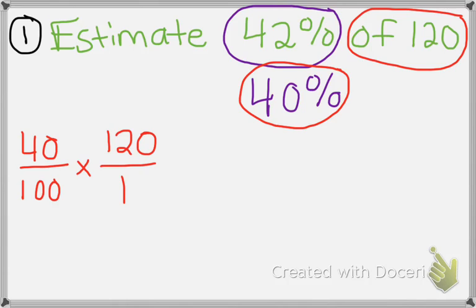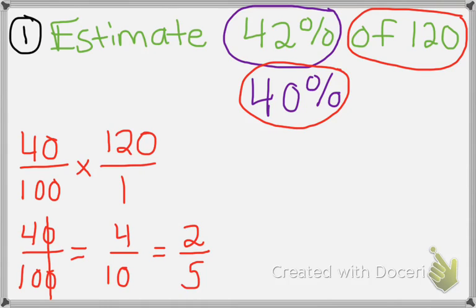Now before you can multiply, you can also simplify. So if you want to do that instead, 40 over 100. First thing that we can do, we see that both numbers have a zero at the end, so we can cross that out. So now we're left with 4 over 10. Now we can simplify more. We can simplify by 2. So 4 divided by 2 is 2, and 10 divided by 2 is 5.